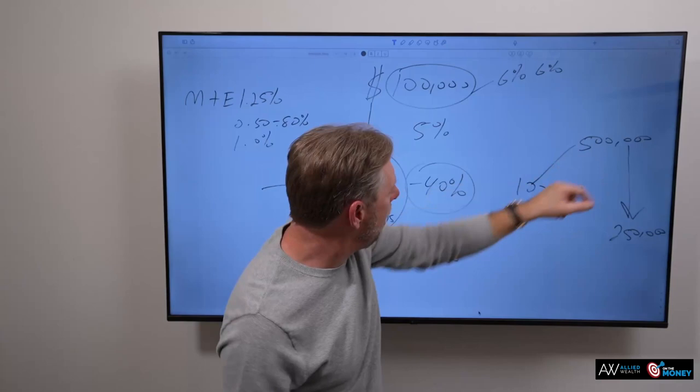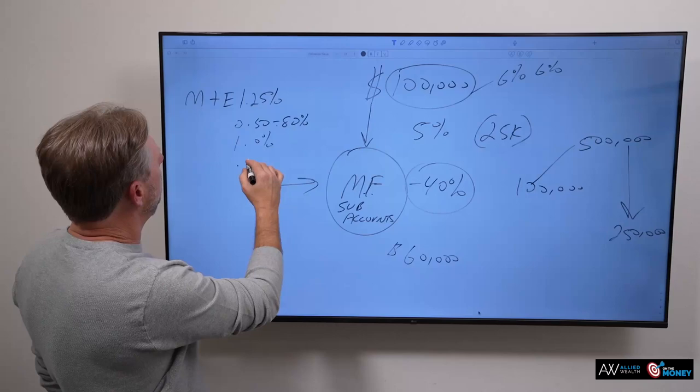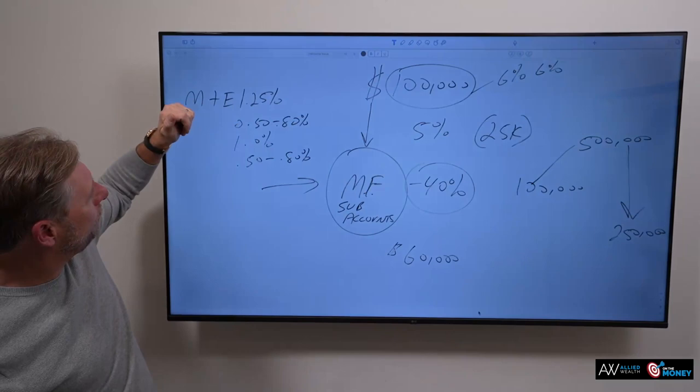Now, you take the 5% distribution rate times $500,000. And that would give you a $25,000 per year guaranteed income paycheck for life. All right. Guess what, though? They charge you a fee for that. And that fee runs simply another 0.50% to 0.80%. All right. So, we're getting up here in fees pretty quick. So, now we're at 2.0. Let's say do the math.